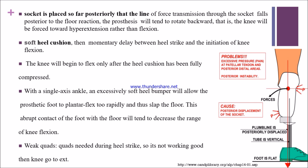If the plantar flexion bumper is too soft, there will be a momentary delay between heel strike and initiation of knee flexion. The knee begins to flex only after the cushion is fully compressed. In a single-axis ankle with an excessively soft plantar flexion bumper, the prosthetic foot plantar flexes too rapidly, producing a slap sound on the floor, abrupt contact, and decreased knee flexion range.